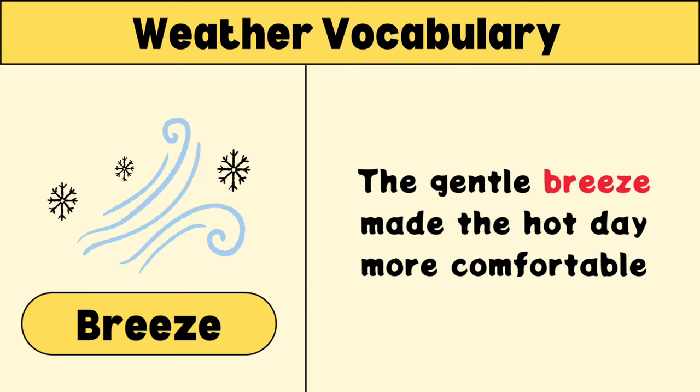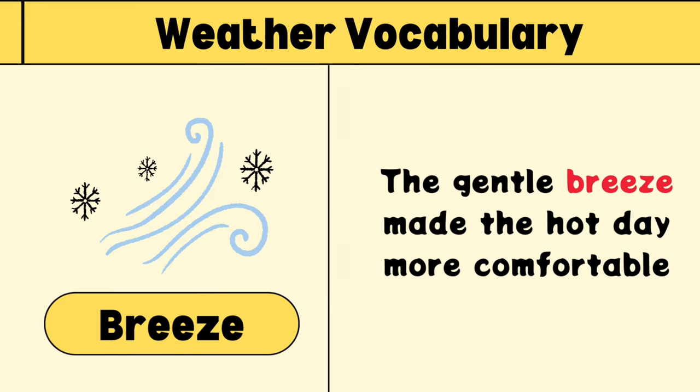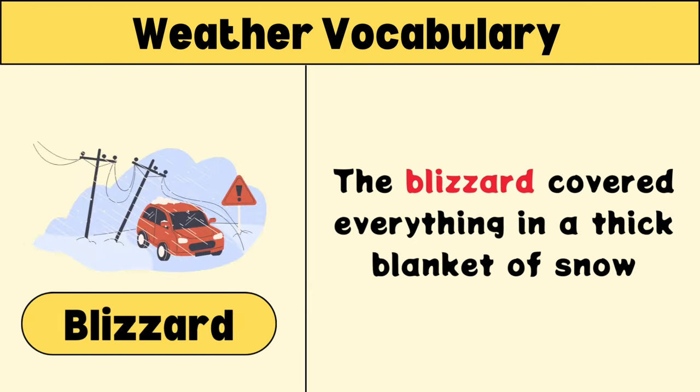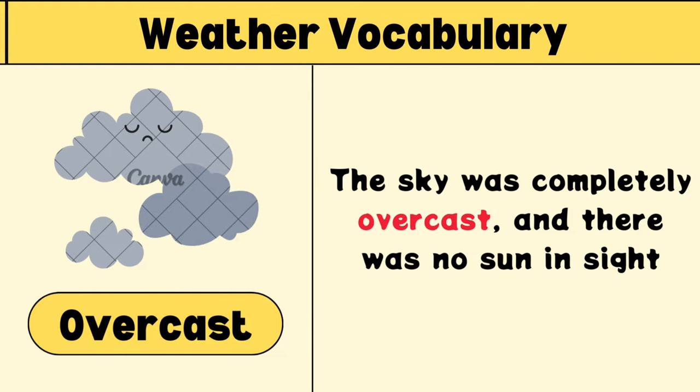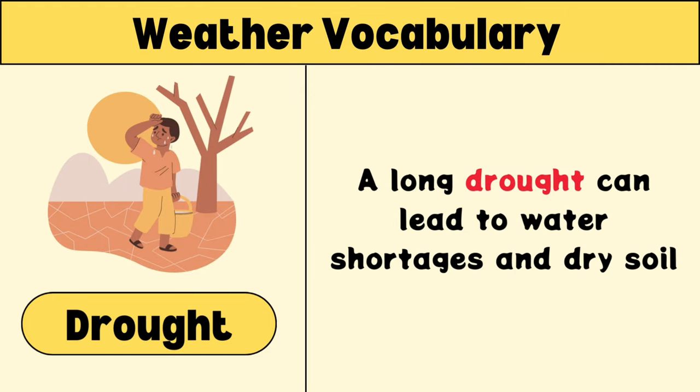Breeze: the gentle breeze made the hot day more comfortable. Blizzard: the blizzard covered everything in a thick blanket of snow. Overcast: the sky was completely overcast and there was no sun.